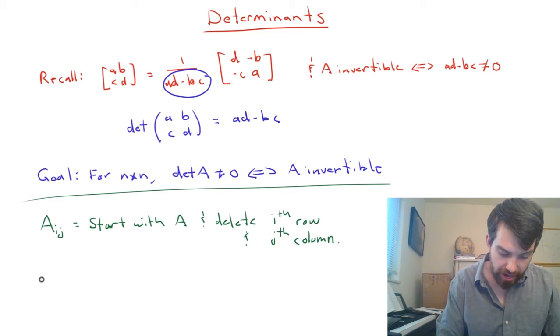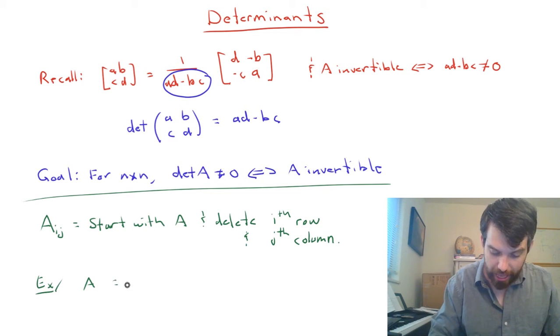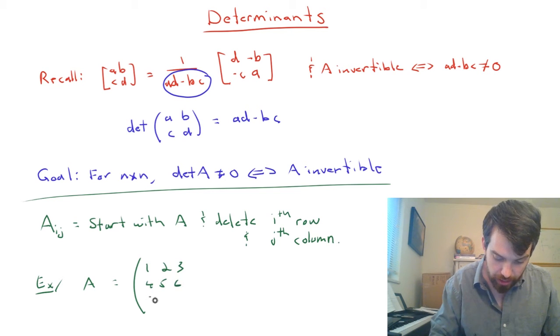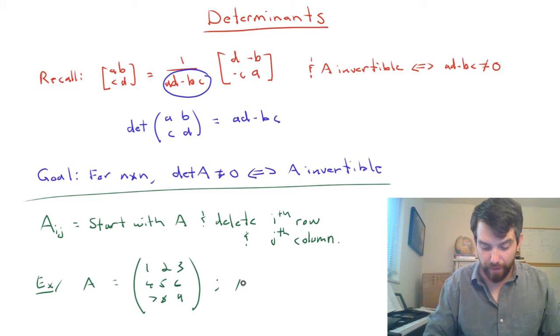So, for instance, if I take as an example, and I've got some matrix A which is going to be 1, 2, 3, 4, 5, 6, 7, 8, 9.